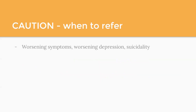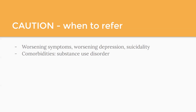When to refer: if patients have worsening symptoms, worsening depression, or suicidality, they need to stop the medication and get a psychiatric referral for a higher level of care. I love cold calls — I call psychiatrists I have relationships with to ask for their advice. If patients have comorbid substance use disorder, they likely need more support than primary care can provide and should have a psychiatric prescriber from the start. Always warn patients about the risk of worsening symptoms, depression, or suicidality before they even start the medication, so they can let you know as soon as possible.